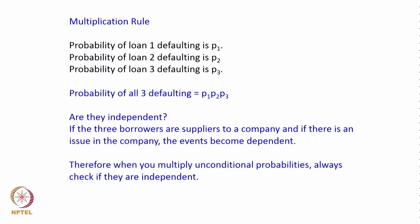Consider another question: the probability of loan 1 defaulting is P1, loan 2 defaulting is P2, and loan 3 defaulting is P3. Are these independent? If the three borrowers are suppliers to the same company and that company has issues, there is a dependency. Therefore, when multiplying unconditional probabilities, always check whether the events are truly independent — only then can you apply the multiplication rule.